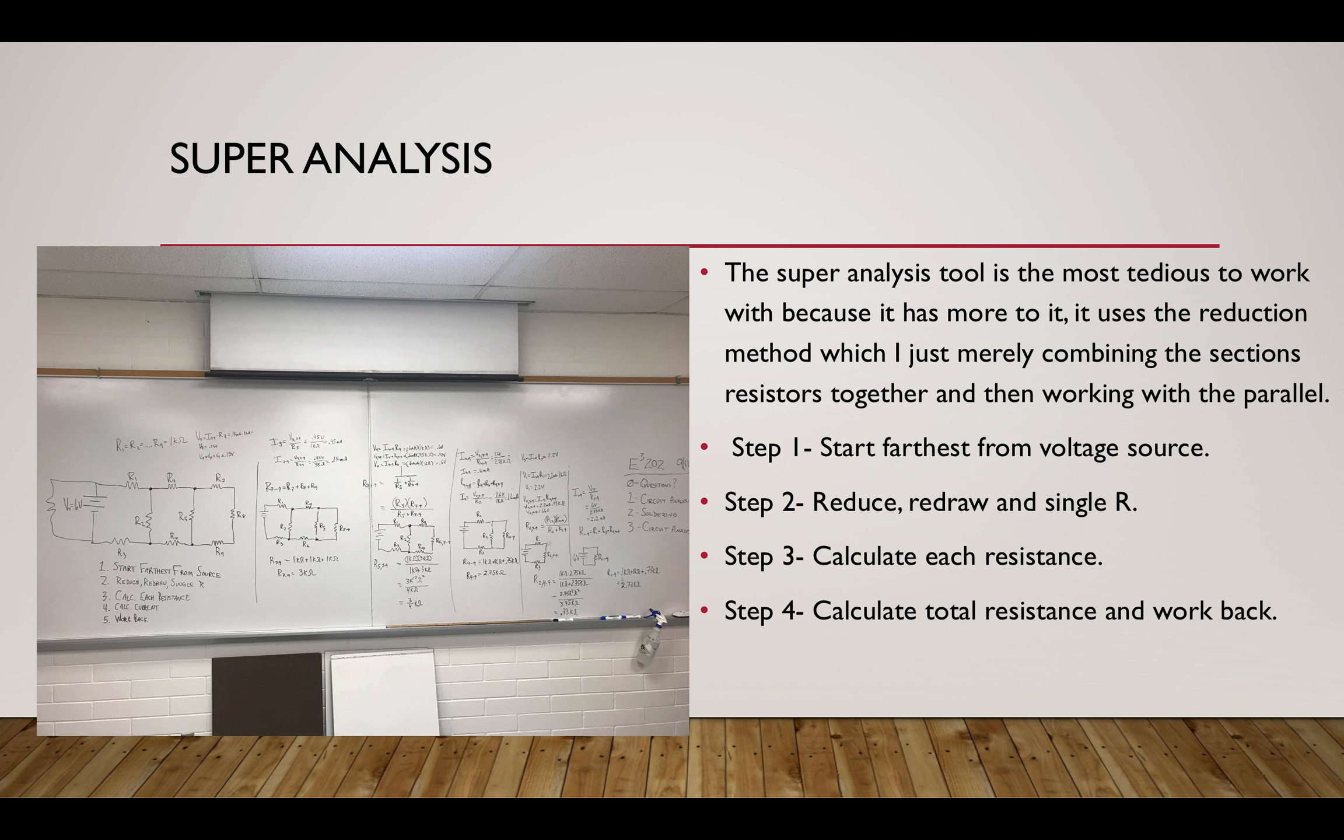Now the circuit super analysis is pretty big depending on the circuit as well. The easiest way to look at it is if we start following these steps right here. Start farthest from the voltage source. That's step one. Step two is to reduce, redraw as a single R. So if you can see right here, what we're basically doing is we start from farthest which is this one right here and we combine these.